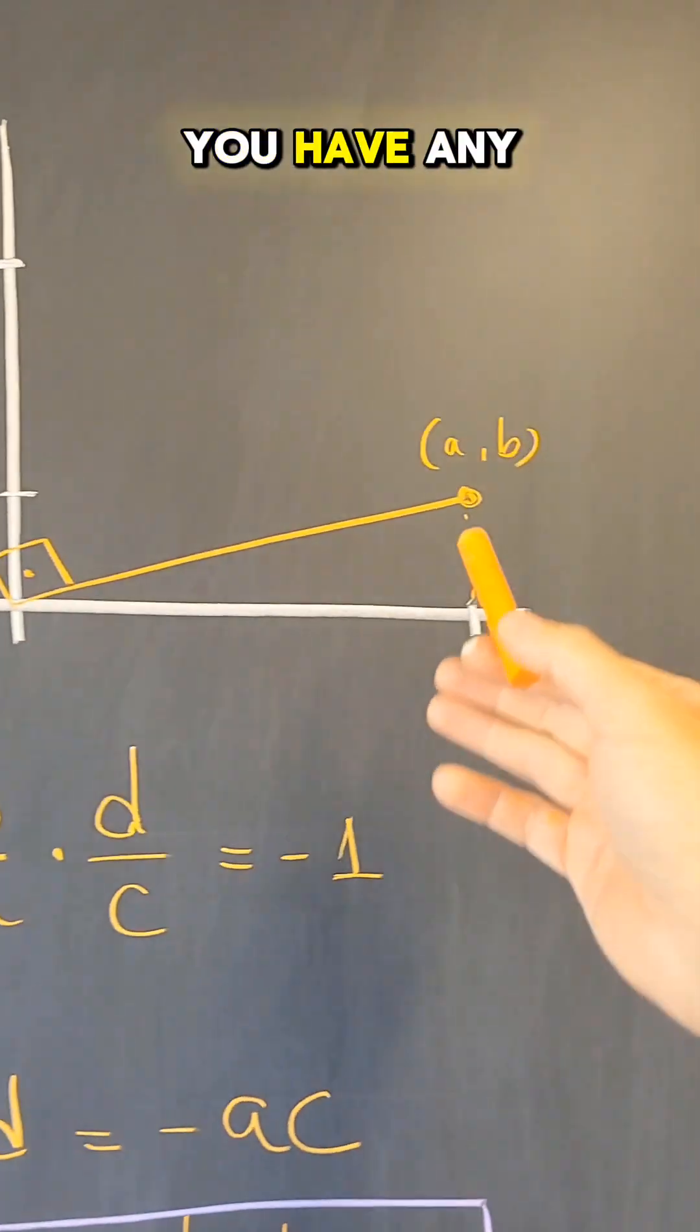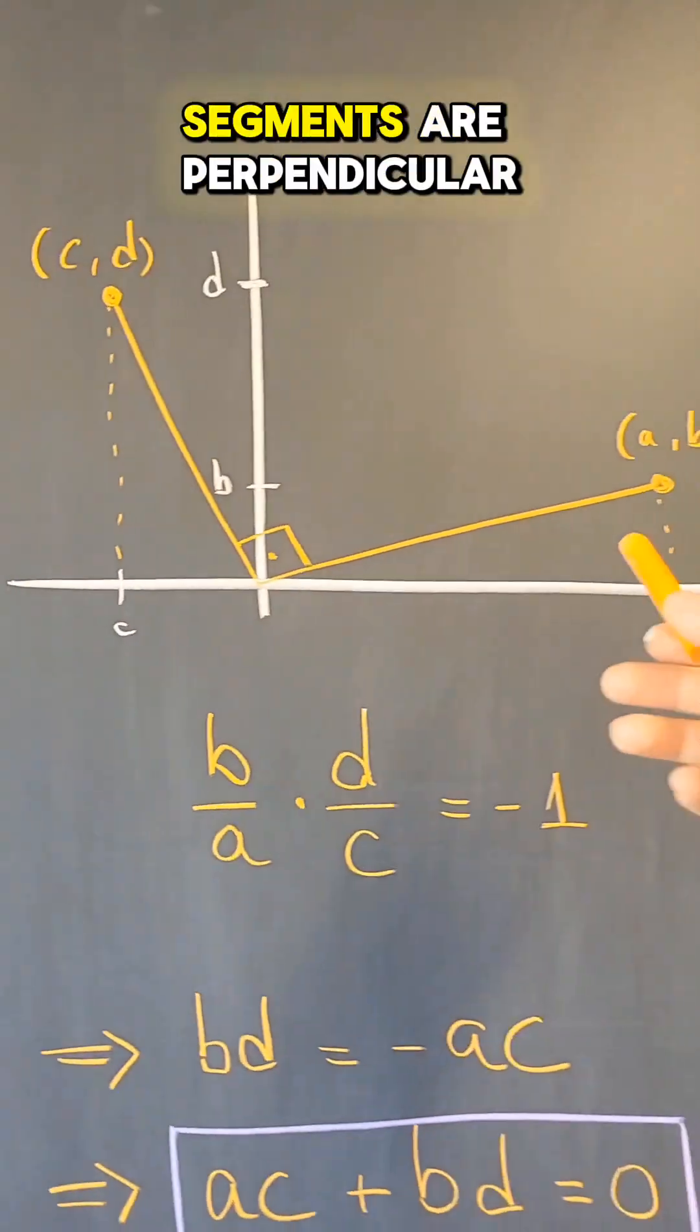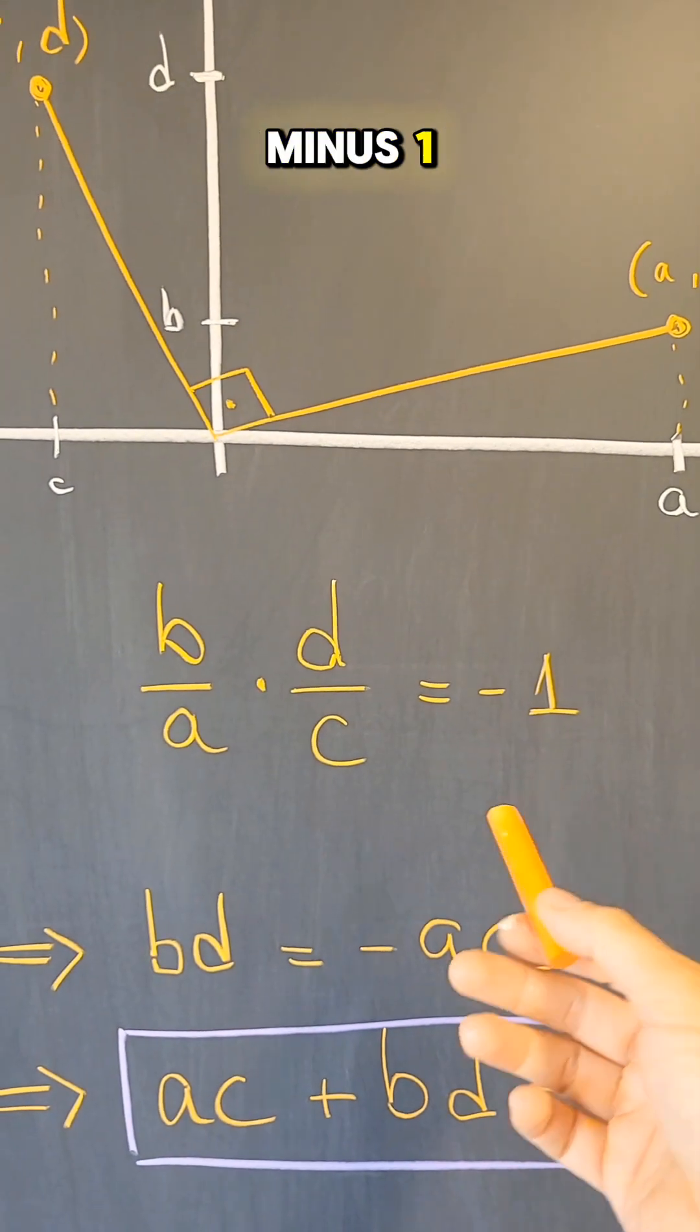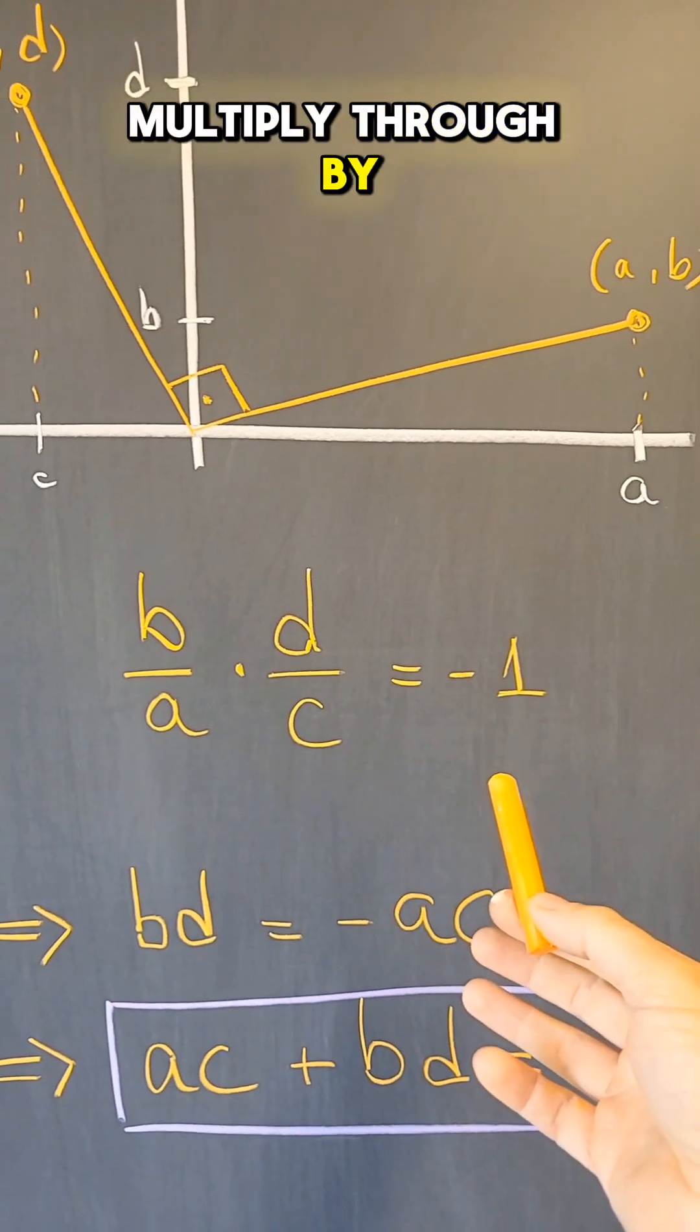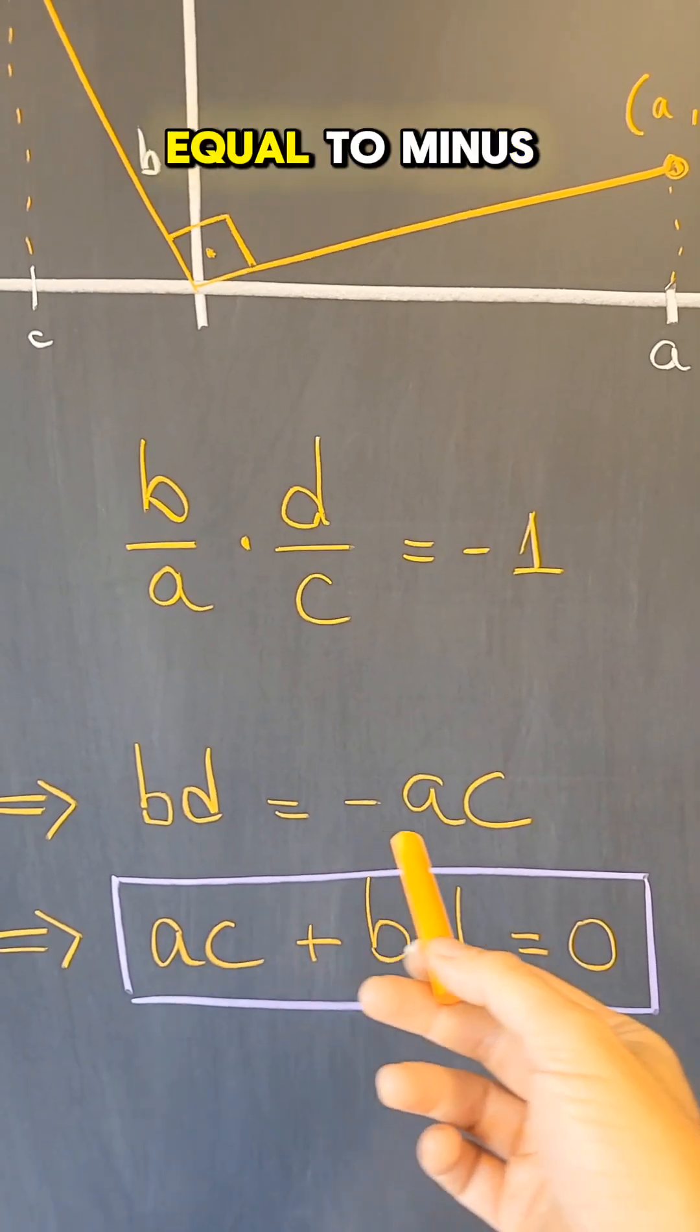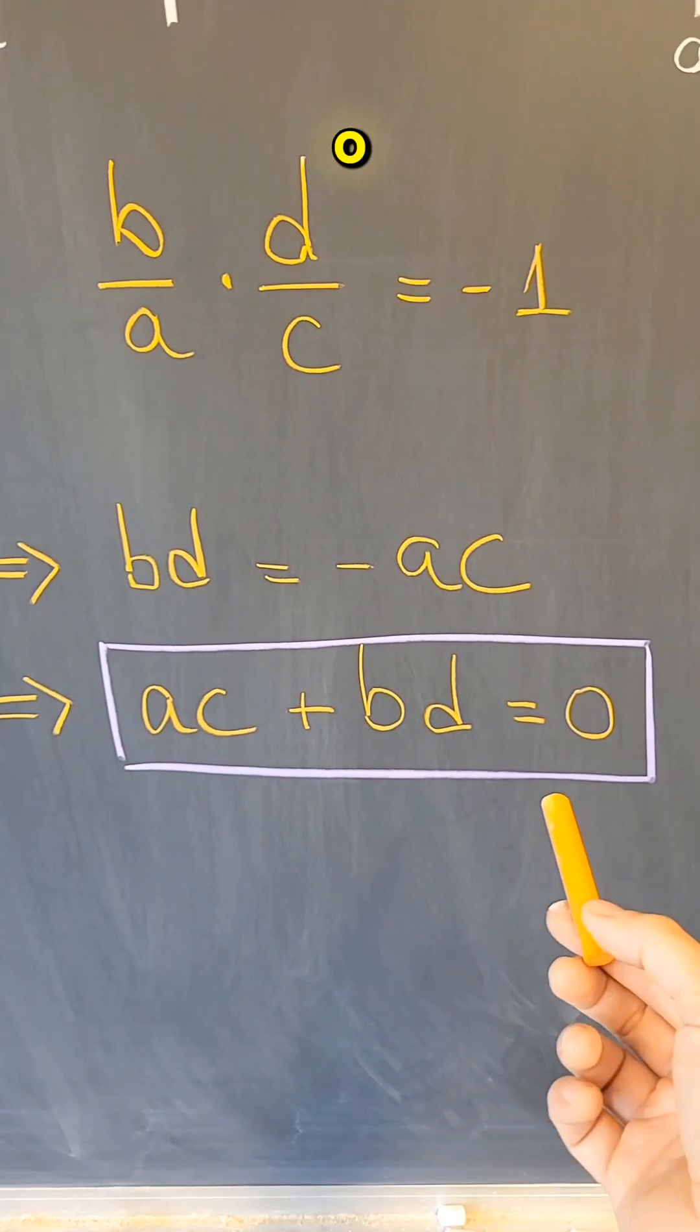What I've shown is that if you have any point a, b, and any point c, d such that these segments are perpendicular, then the slopes multiply to be minus 1. So b over a times d over c will be minus 1, and if you multiply through by a times c, then you get that bd is equal to minus ac, or in other words, that ac plus bd equals 0.